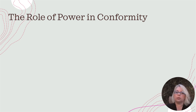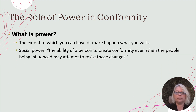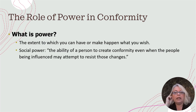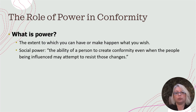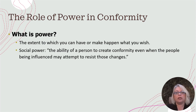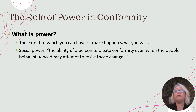Let's talk about the role of power in conformity, which is a critical piece of Milgram's work. In lay terms, power is the extent to which you can make happen whatever you want — the more powerful you are, the greater your ability to do so. Social power is the ability of a person to create conformity even when the people being influenced may attempt to resist those changes. Power is making something happen no matter what, and that can happen in a social or individual context.